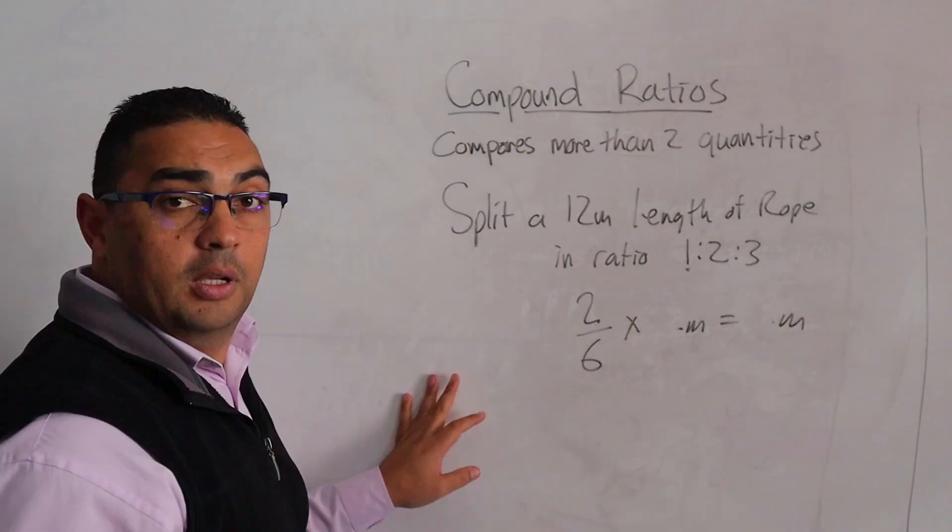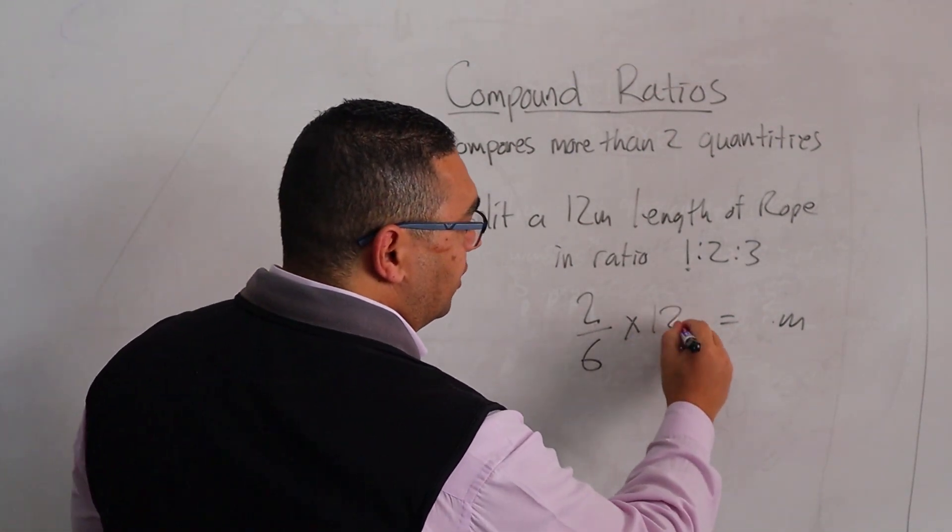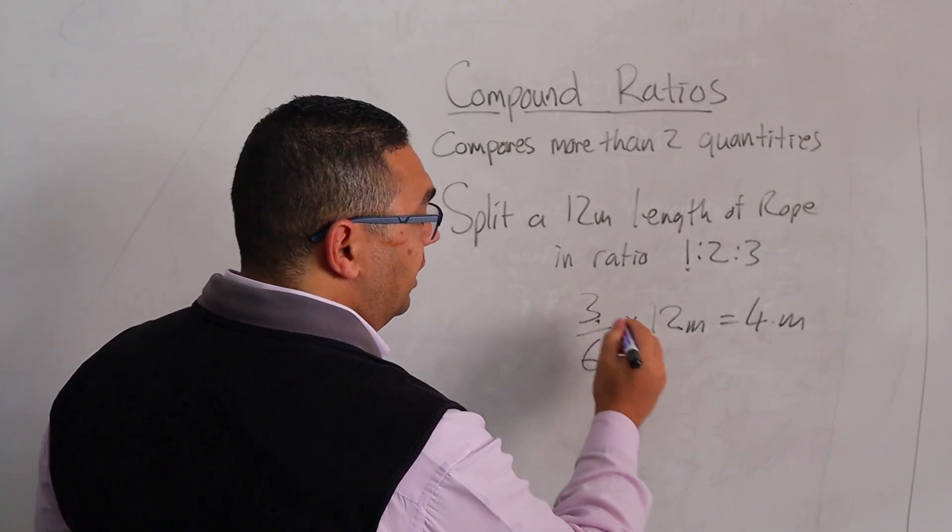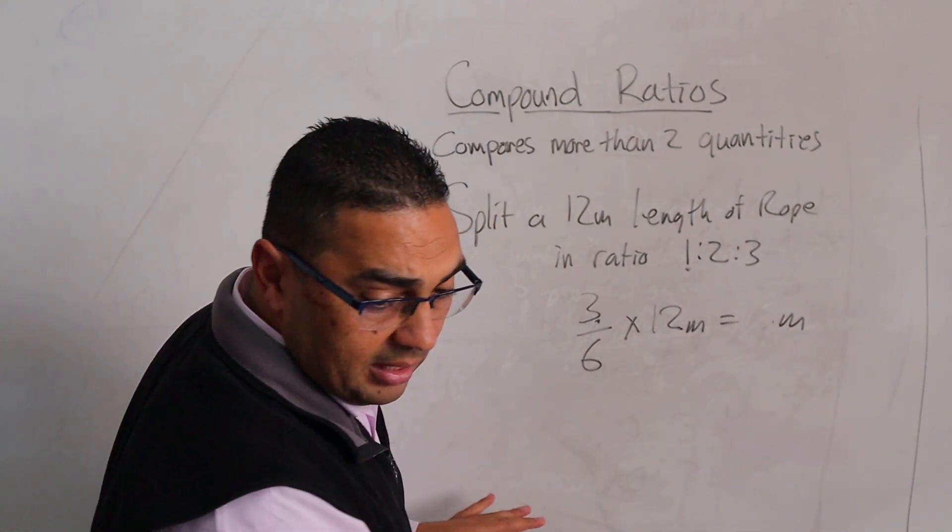I'm going to do the same with the second one: 2 out of the 6 times the 12 meters, and I'm going to end up with 4 meters. And the last one, I'm going to go 3 out of 6, and this is going to end up being 6 meters.